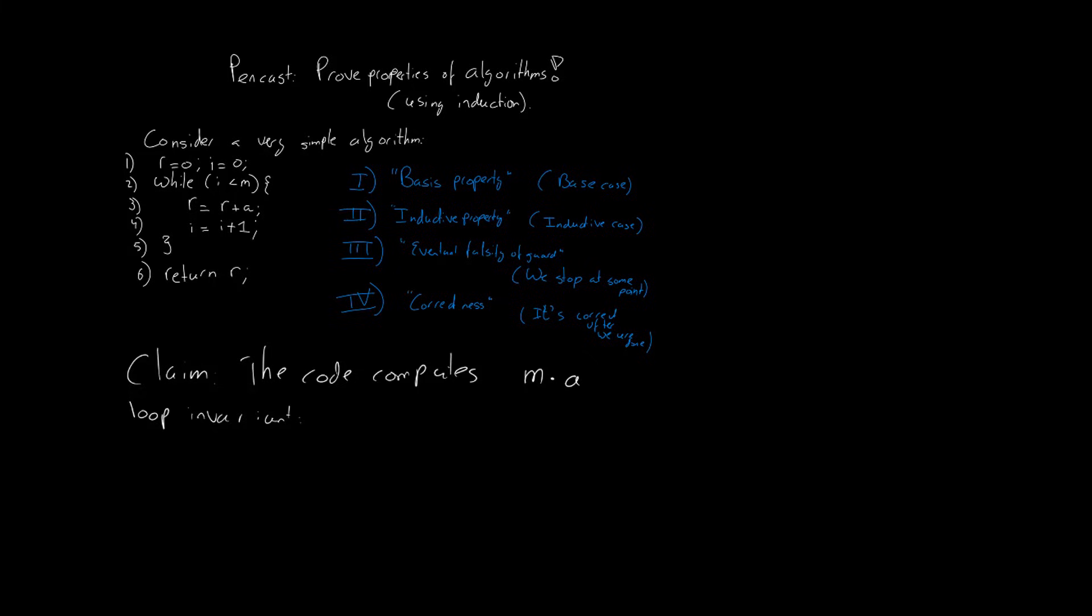In this case, I say that the loop invariant is the following. The variable r is equal to i times a. Before the loop, after every iteration of the loop, and after the code is done. And this is what we're now going to prove.